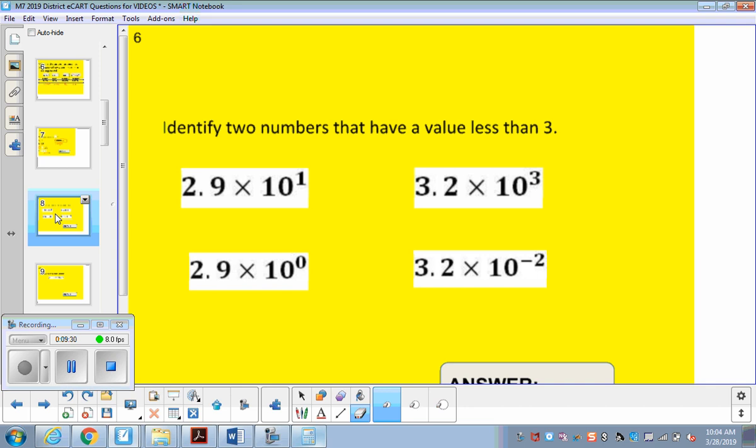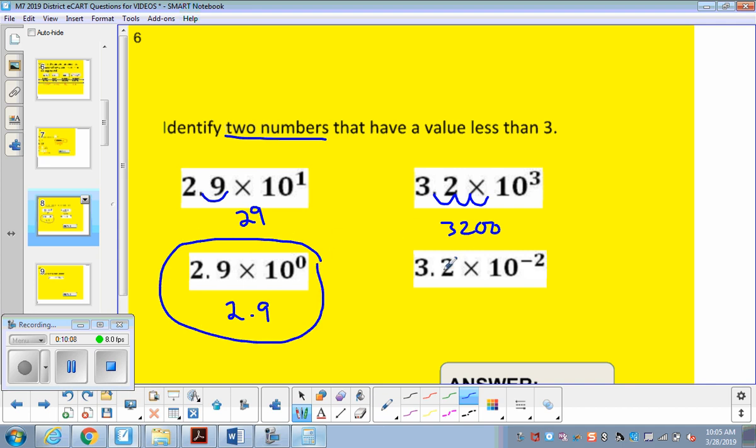Now we're on the last question that pertains to this review topic. The last question is identify two numbers that are going to be smaller than 3. According to scientific notation, we're going to move this decimal over once and the first number is 29. That is not smaller than 3. For this one we're going to move the decimal over 3 times and get 3,200. That number is not smaller than 3. Anything to the zero power is 1, so 2.9 times 1 is 2.9. That value is less than 3. And here if we move this one back twice we're going to get 0.032, and that one is less. So these two right here are going to be the numbers that we've identified as less than 3. And that concludes this video. Thank you.